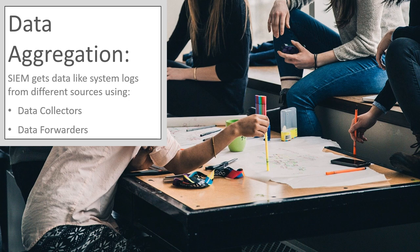Data Aggregation: SIEM solutions need data from multiple sources as part of data aggregation — moving data into a single place. The SIEM systems either collect the data themselves or use forwarders to send logs from other systems to the SIEM system. These logs are a series of events recorded in files, providing a history of activity. Once the SIEM system has the logs, it uses a process to analyze the events and categorize them based on severity.